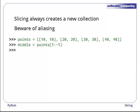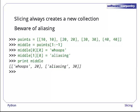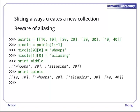The expression points[1:-1] creates a new list with two elements. Those two elements are references to the second and third of the sublists that points refers to. If we change the content of those sublists by reaching through middle, then not only is middle changed, but points appears to change as well.